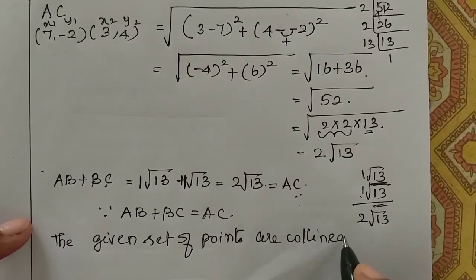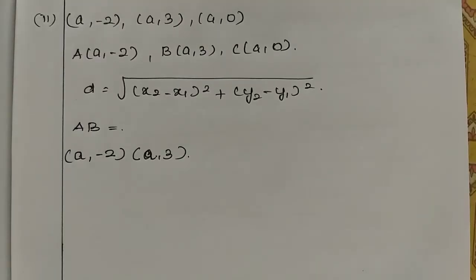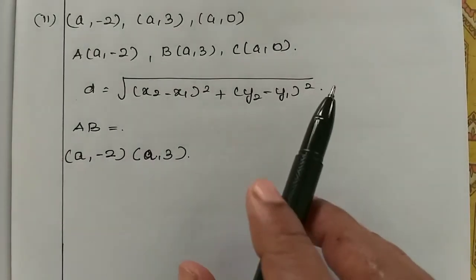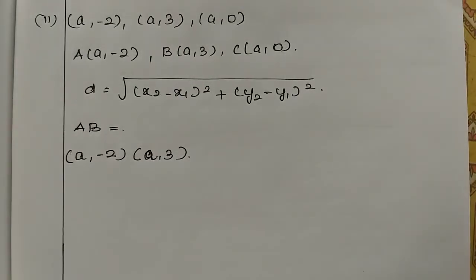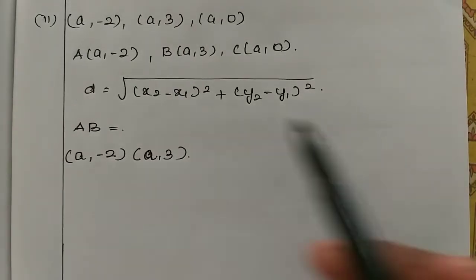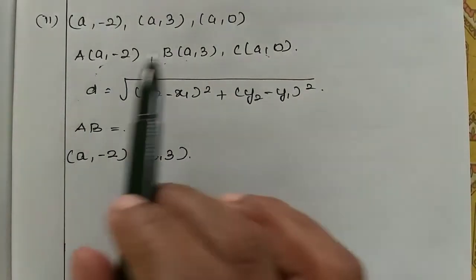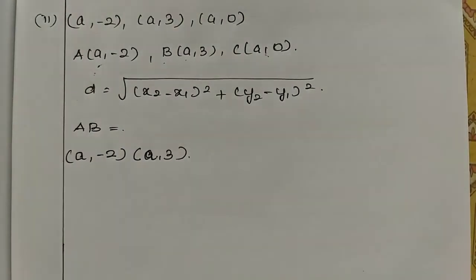So second part: points A (a, minus 2), B (a, 3), and C (a, 0). Three points - we need to check if they are collinear. As usual, we need to find AB, BC, AC, and check if AB plus BC equals AC.